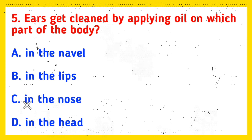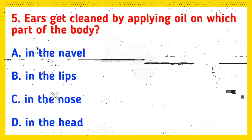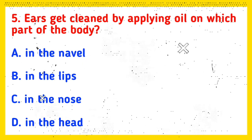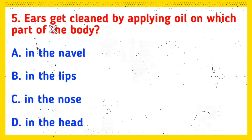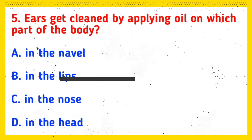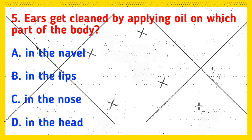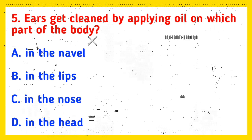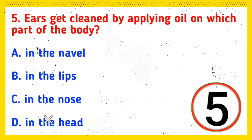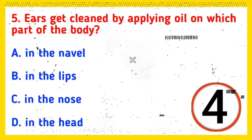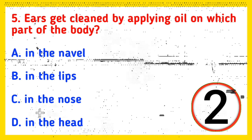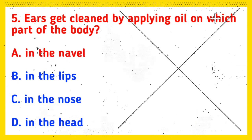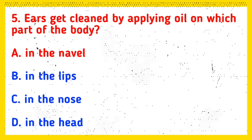Q5: Ears get cleaned by applying oil on which part of the body? Option A: In the navel, Option B: In the lips, Option C: In the nose, Option D: On the head. And the correct answer is Option A, In the navel.